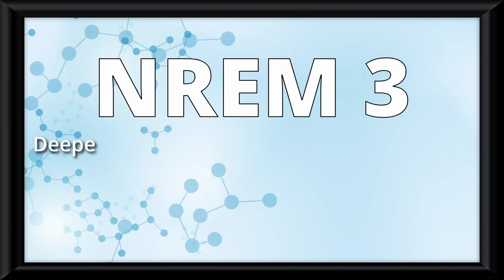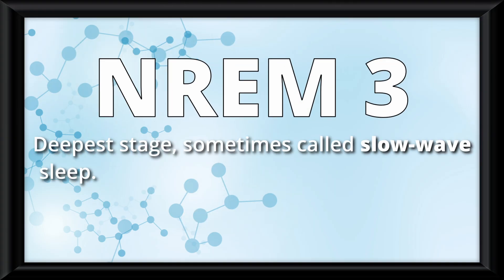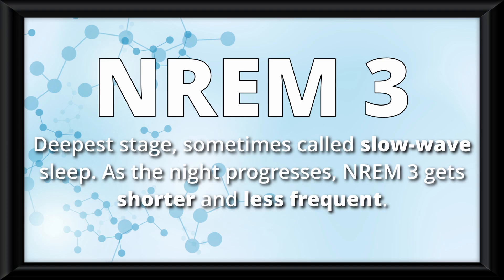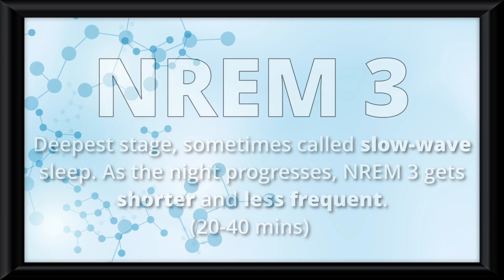Non-REM 3 is the deepest stage, sometimes called slow-wave sleep. As the night progresses, Non-REM 3 gets shorter and less frequent, ranging from about 20–40 minutes.